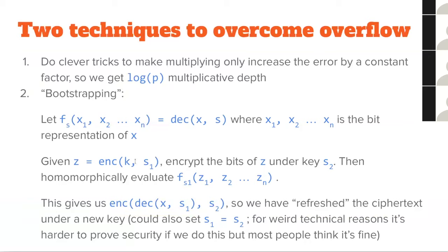K is just whatever value the ciphertext is encrypting. One question: once you've re-encrypted with lower error, why can't you back-propagate that lower error through every previous multiplication? The problem is that lower error plus higher error equals higher error — any function with a lower-error and higher-error input produces a higher-error output. Because the errors are randomly generated, you're not going to be able to make them cancel.